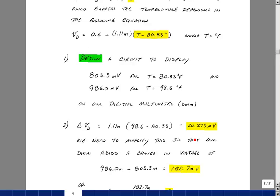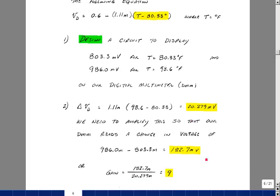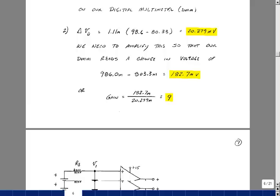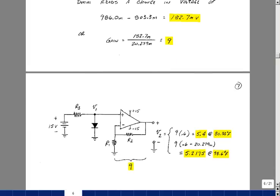Now, I need that to correspond to a change in voltage on the multimeter of 182.7 millivolts. I need to amplify this change in voltage with temperature. So, let's just take the ratio of these two, and that would give me a gain of around 9. So, I need to amplify this change in voltage by a scale factor so I can get these results. Well, we could just use a non-inverting op-amp with a gain of 9.